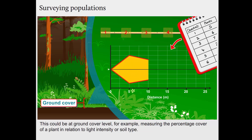This could be at ground cover level — for example, measuring the percentage cover of a plant in relation to light intensity or soil type.